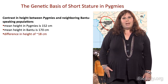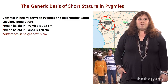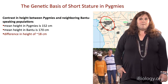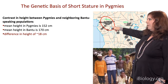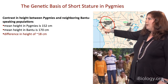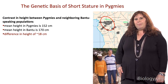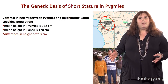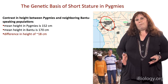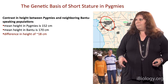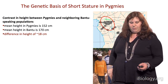The genetic basis of short stature in pygmies has been of tremendous interest to endocrinologists and human geneticists for more than 50 years. The populations we studied are three different groups from Cameroon, whose mean male height is 152 centimeters. They live in close interaction with neighboring populations who speak Bantu languages and practice agriculture, and whose mean male height is 170 centimeters — quite a difference.